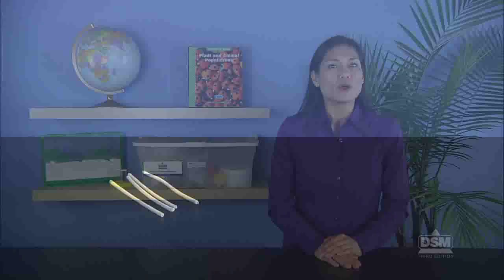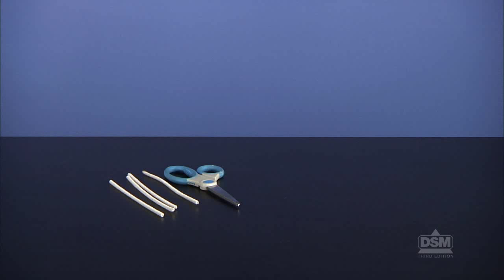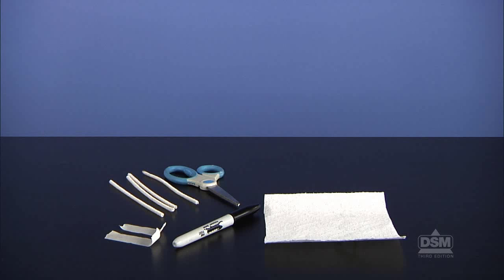Each team of 4 will need 4 pipe cleaners, a pair of scissors, 2 pieces of masking tape, a marker, a piece of paper towel, and their foam cup with bean plants and aphids.